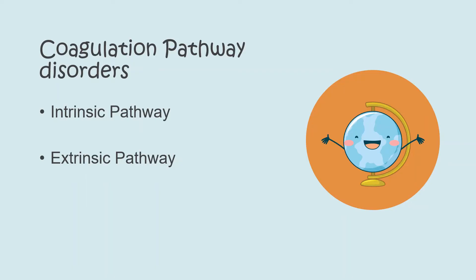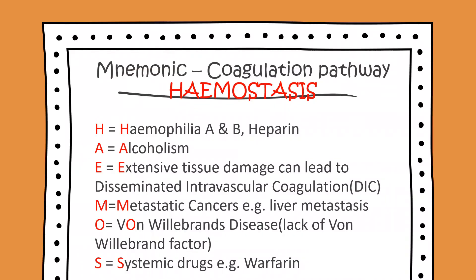The third cause of coagulation disorders is due to disorders within the coagulation pathway, which are divided into two: the intrinsic pathway and the extrinsic pathway. We'll look at the mnemonic that identifies what conditions and factors can lead to coagulation pathway disorders. We'll be using the mnemonic HEMOSTASIS.